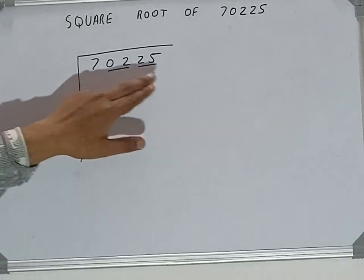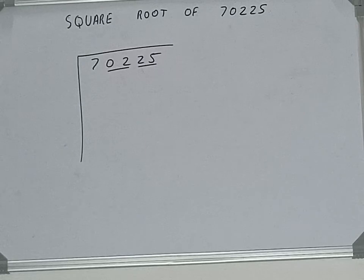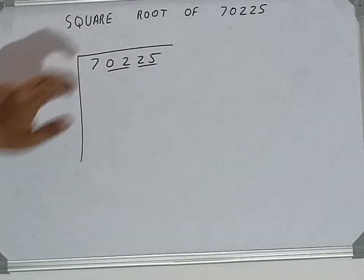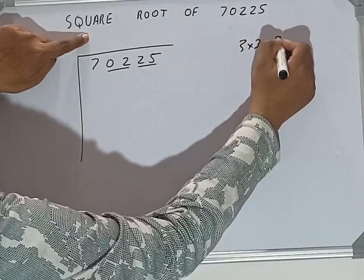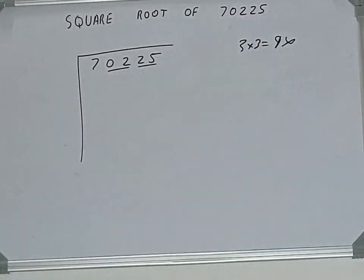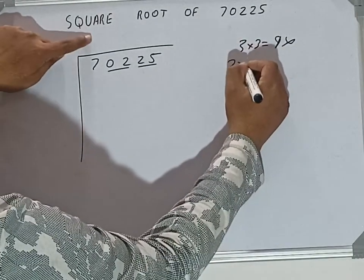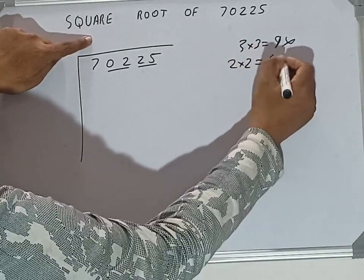The rule is whatever number we write here, we need to write here also. So if we write three here and three here, it will be nine, which is greater than seven, so we cannot take it. If we write two here and two here, it will be four, which is good to take.